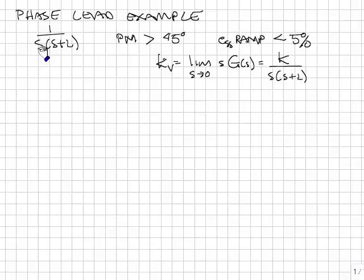But if we put a ramp input in, then we will have some steady state error. And that steady state error or the amount of that steady state error is controlled by the total gain of the system. So the first thing I can do is just design the gain of the system.